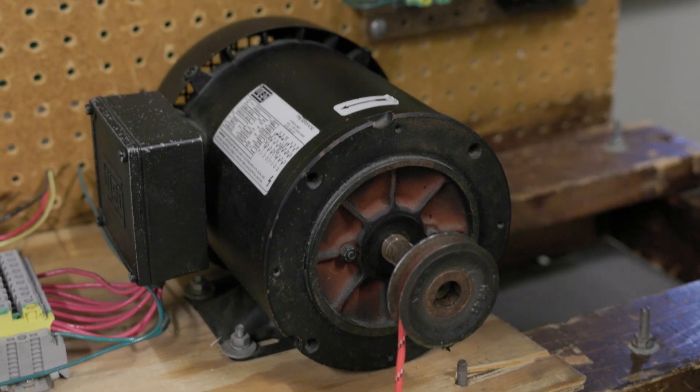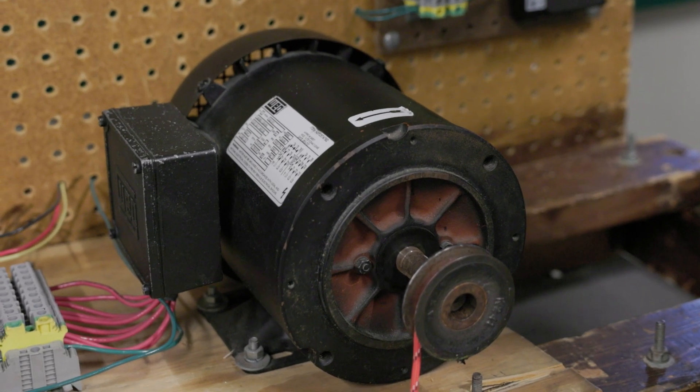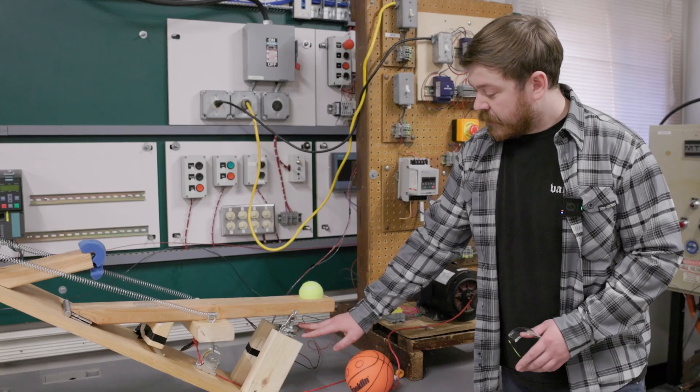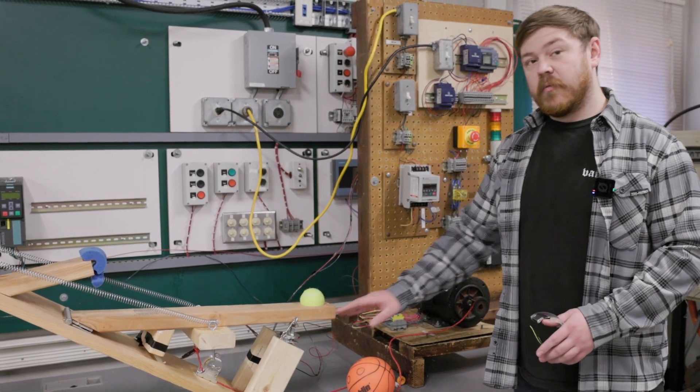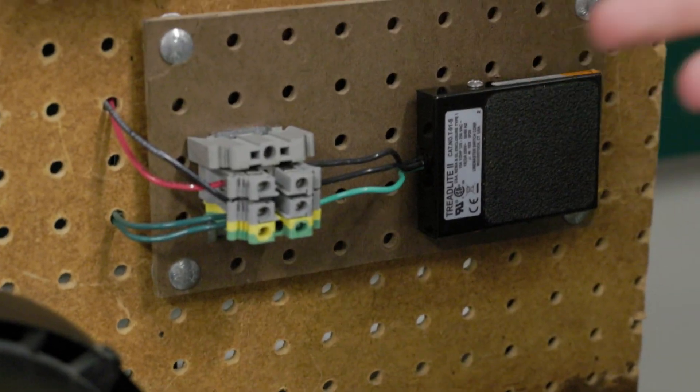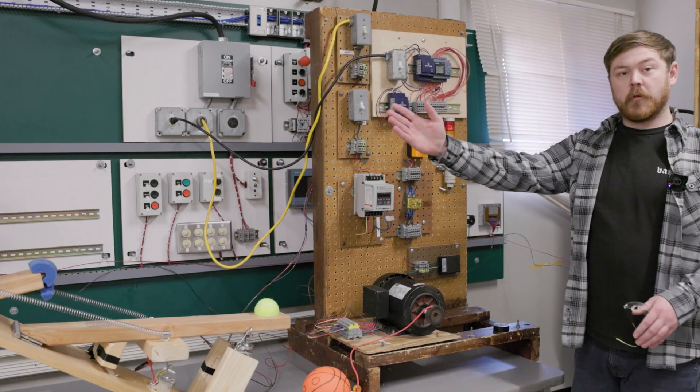This motor is set up to reload our catapult. It'll pull the arm down. And then we have a holding circuit with this magnet that will keep the arm locked down once the motor is done running. And then we have a switch here that will cut power to the magnet, which allows the arm to go forward.